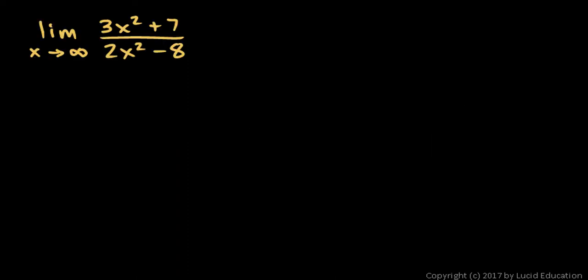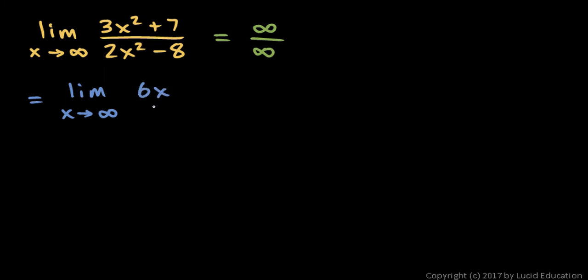Here's another example: the limit as x approaches infinity of 3x squared plus 7 over 2x squared minus 8. These are both quadratics — parabolas opening upward — so as x gets big, both the numerator and denominator get big. This is infinity over infinity, an indeterminate form, so we apply L'Hopital's rule. This gives the limit as x approaches infinity of the derivative of the numerator, 6x, over the derivative of the denominator, 4x. The x's cancel and we're left with 6 over 4, which simplifies to 3 over 2.